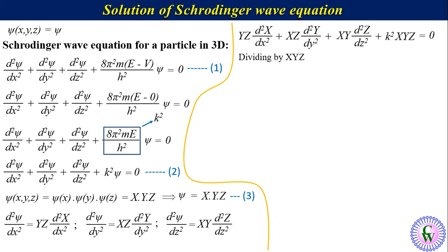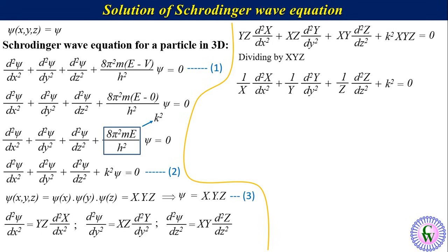Dividing both sides of this equation by X·Y·Z gives: (1/X)·(d²X/dx²) plus (1/Y)·(d²Y/dy²) plus (1/Z)·(d²Z/dz²) plus k² equals zero. Label it as equation number 4.